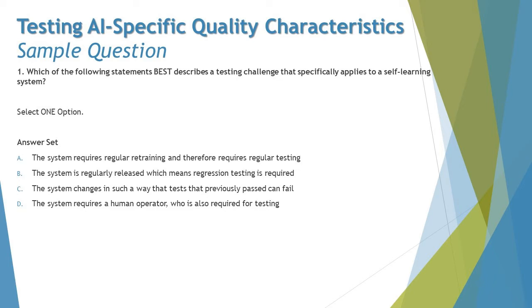Option B says: the system is regularly released, which means regression testing is required. That's also not correct because a system needing regular releases isn't self-learning. Self-learning means the system continuously adapts over time on its own — it doesn't require frequent releases to incorporate changes.